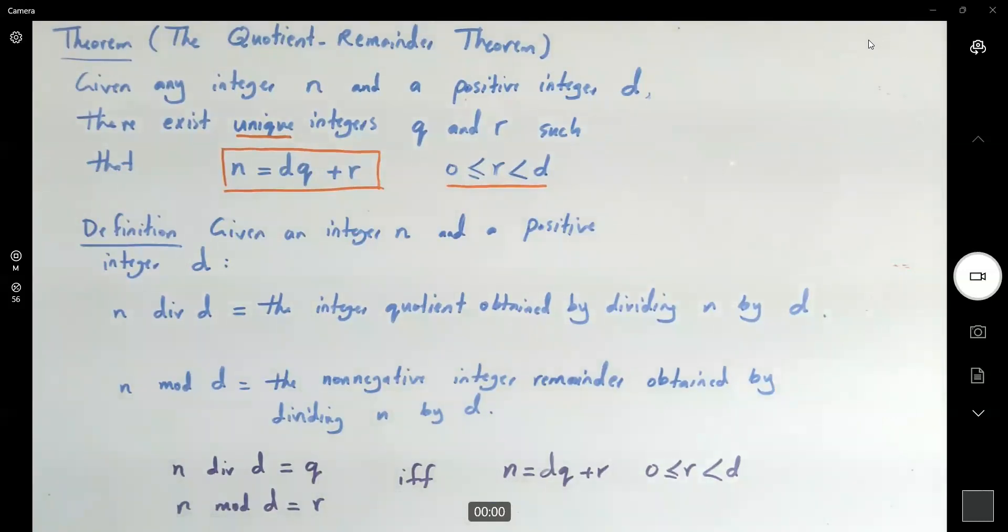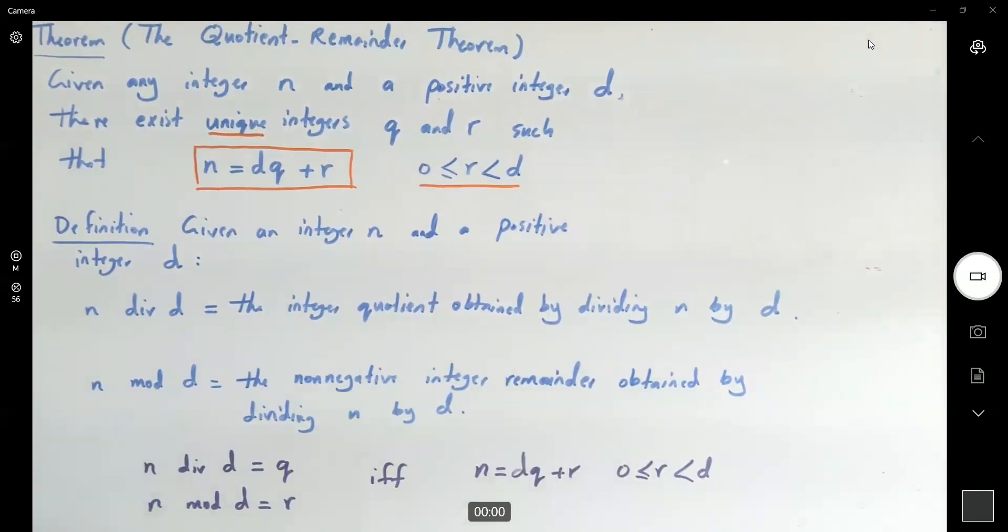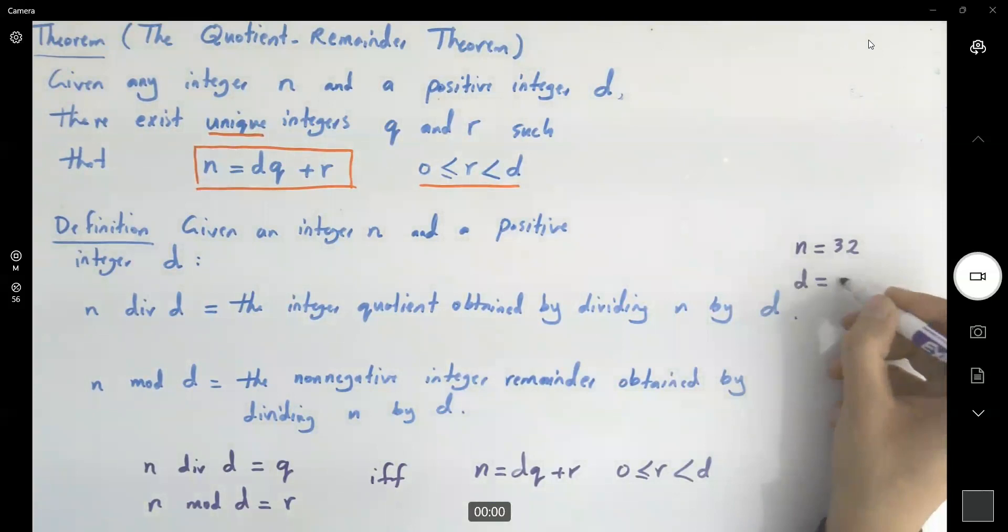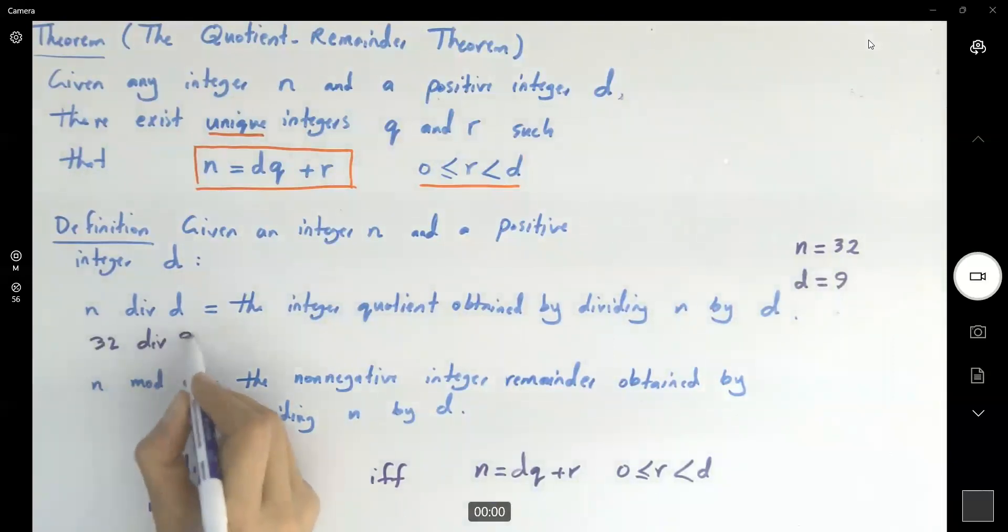So, let's go over a couple of examples. Suppose we have the following. Suppose your n is equal to 32, and your d is equal to 9. Very good. So, when we write 32 div 9,